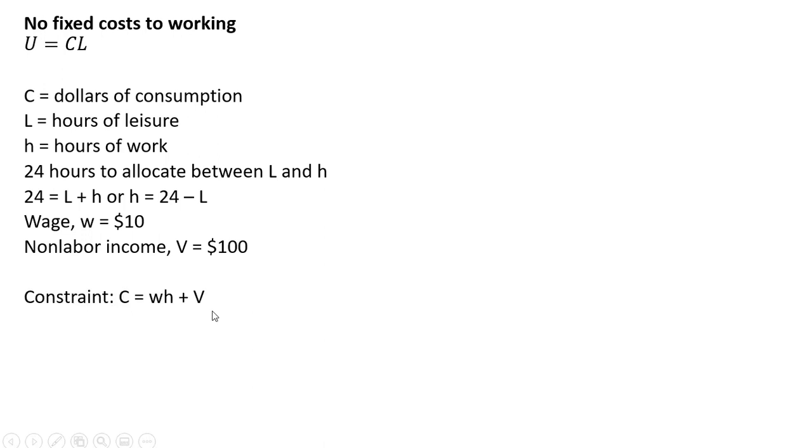And we have a constraint here. So consumption equals the wage times hours of work plus non-labor income. For w, I'm going to substitute in the wage of $10, and for V, non-labor income, that's $100. And then also for h here, I'm going to substitute in 24 minus L, 24 hours minus hours of leisure.